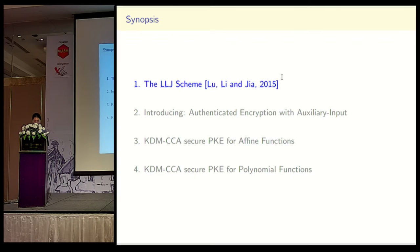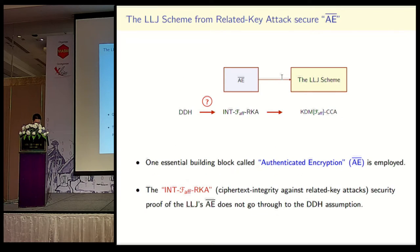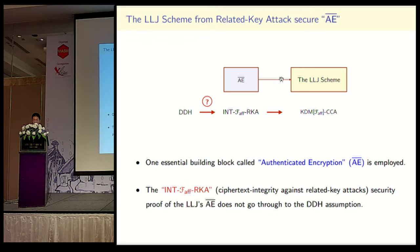Let's first review the LLJ scheme, which was claimed to be KDM-CCA secure for affine functions. One essential building block called Authenticated Encryption, AEBAR, is employed in their construction. The KDM-CCA security of the LLJ scheme heavily relies on the so-called INTF-affine RKA security of the AEBAR. However, the INTF-affine RKA security proof of LLJ's AEBAR does not reduce to the DDH assumption smoothly.